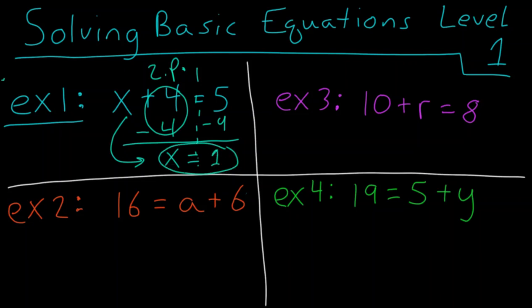Alright, let's move on to example number 2. So here, in red, we have 16 equals a plus 6. Now, we want to get the letter a by itself. So what is the opposite of plus 6? Well, it would be minus 6.